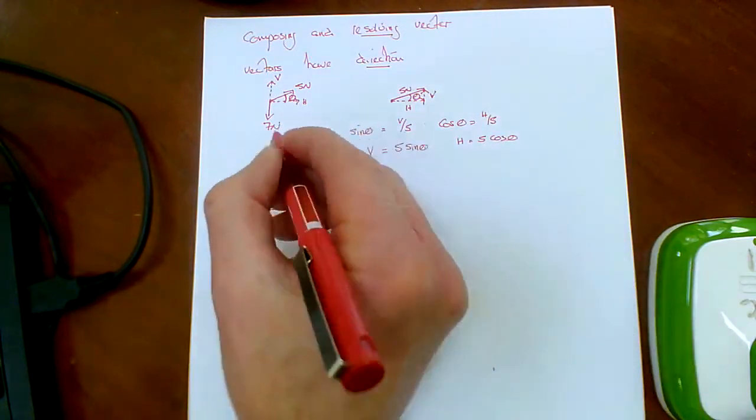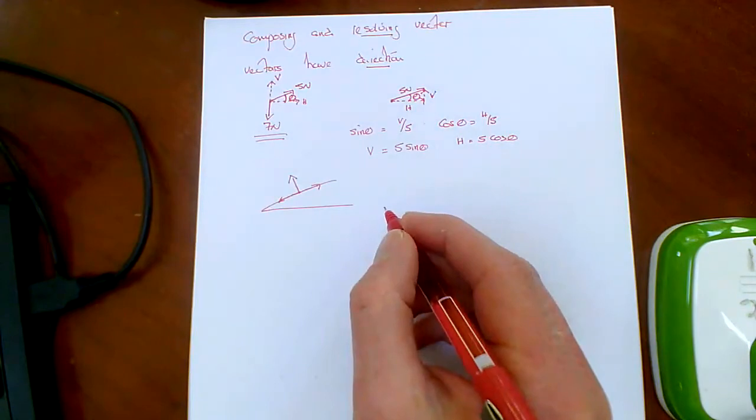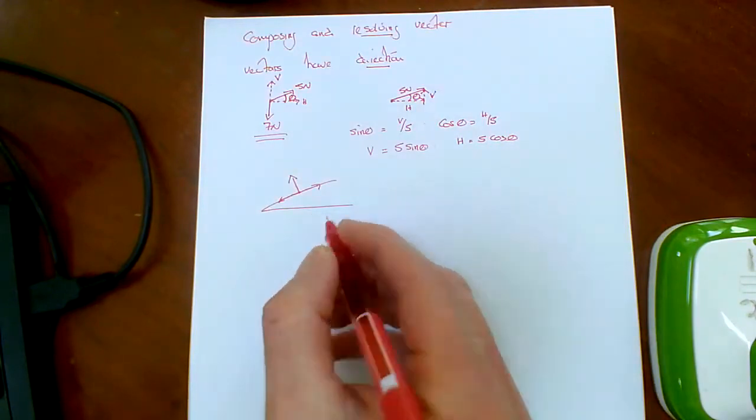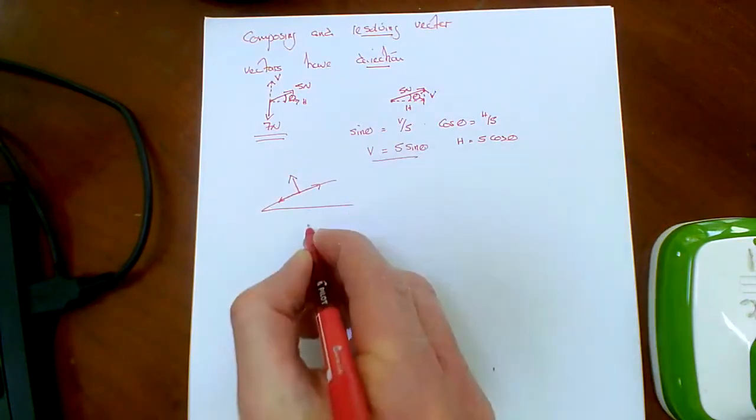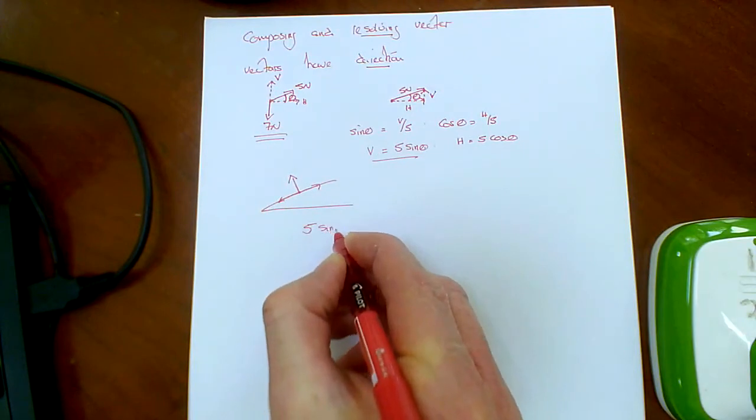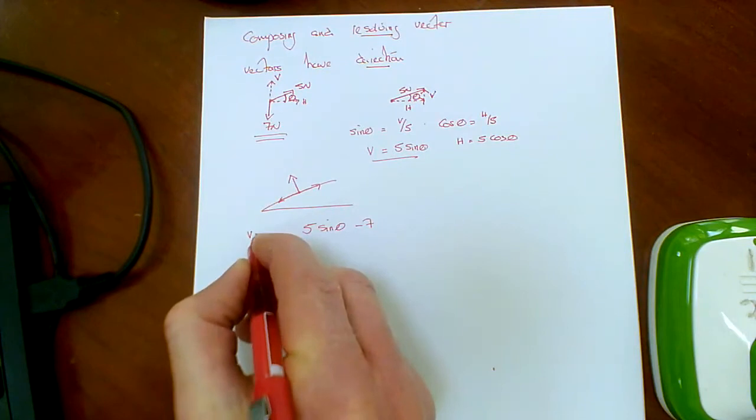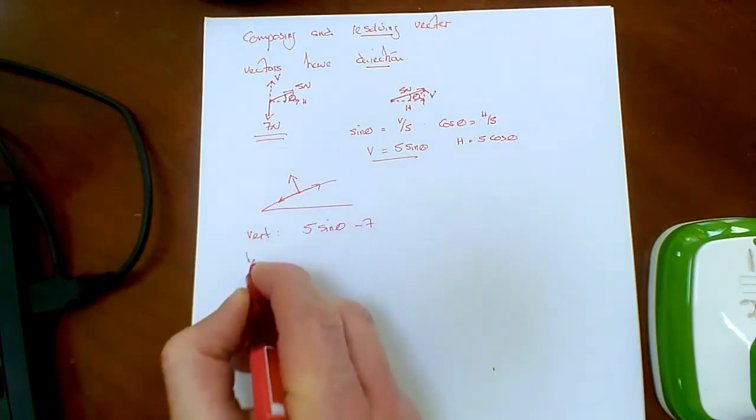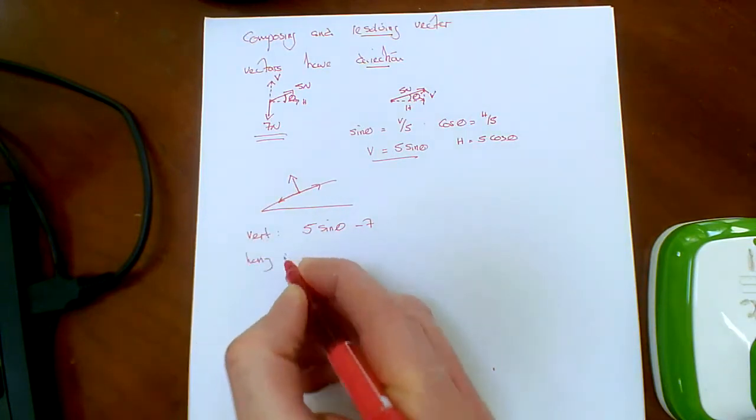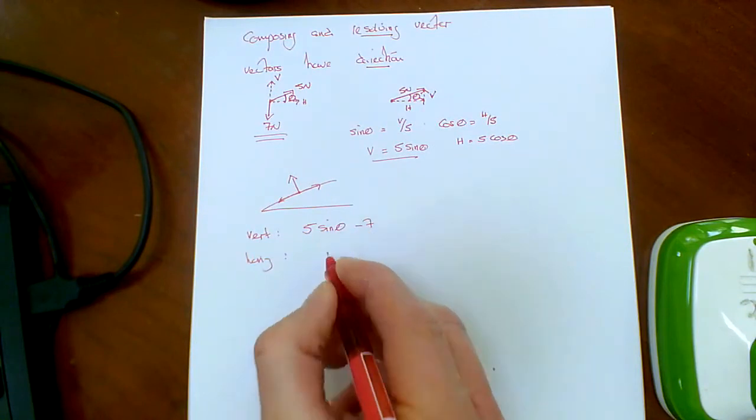So you would say in this example here, you would have vertically, you would have 5 sine theta minus 7. There's vertically. And horizontally, well the 7 doesn't have any effect. Horizontally you've got 5 cos theta.